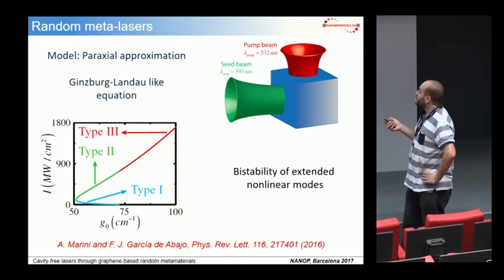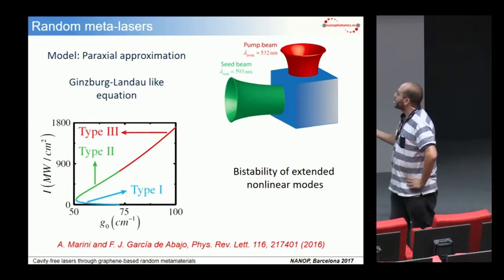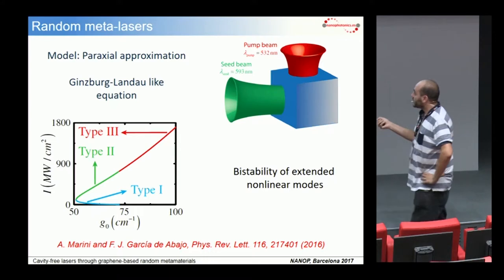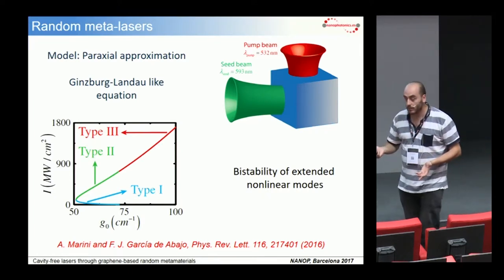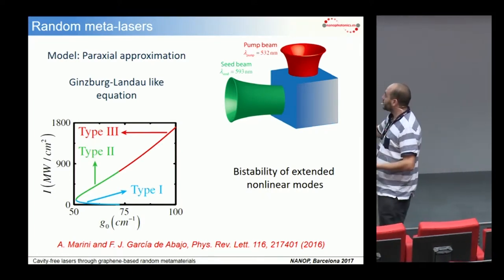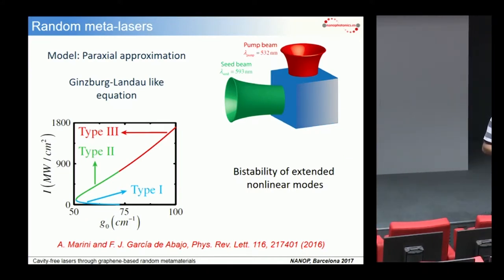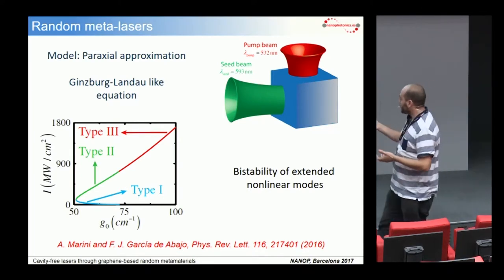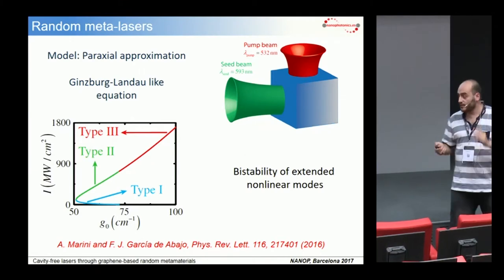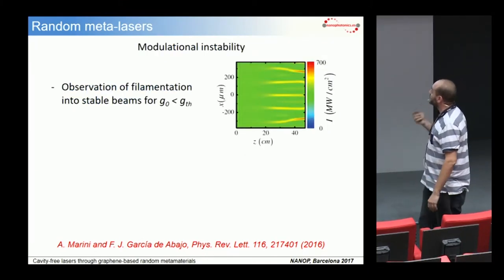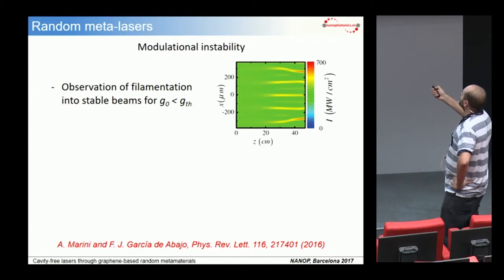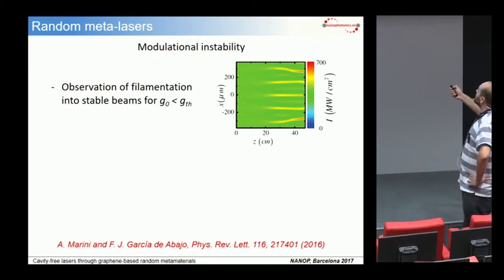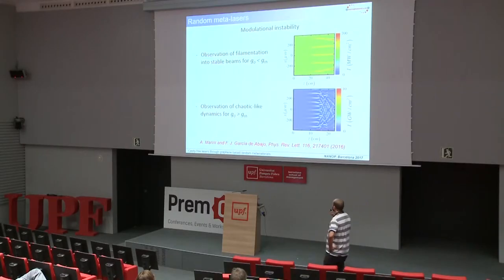We first considered the extended modes of the system and found several families. Depending on the linear gain, for overcritical conditions there exists only one family of extended modes, while in the subcritical region there exists a bistability of two kinds of extended modes — bistability being a strong signature of soliton existence. Studying the stability of extended modes, we observed that for subcritical conditions extended modes, when perturbed over propagation, tend to filament into stable-looking filaments, while for overcritical conditions we observe chaotic-like dynamics.